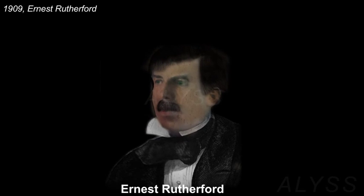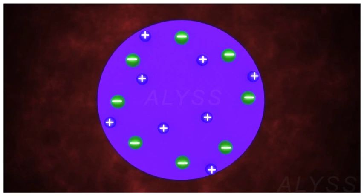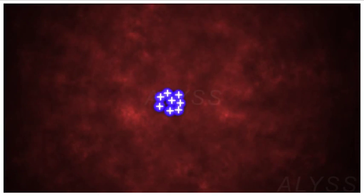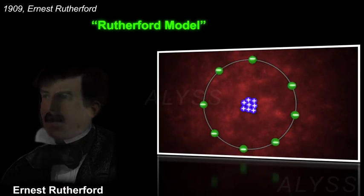Later in 1909, Ernest Rutherford suggested that positive charge and most of atom mass was concentrated in nucleus at the center of the atom. We now know it as Rutherford model.